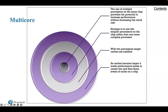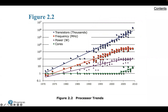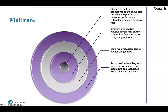The strategy is therefore to use two simpler processors on a chip rather than one more complex processor. We can also see that power — the amount of heat that needs to be dealt with — is starting to flatten out on the chip. With two processors, larger caches are also justified. As logic density on chips continues to rise, the trend is toward both more cores and more cache on a single chip, and we're going to see those trends continuing to progress.